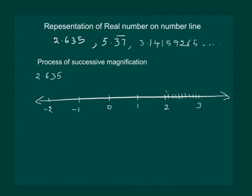Then the first division represents 2.1, second division will represent 2.2 and so on. Now 2.6 means this point, the sixth division.